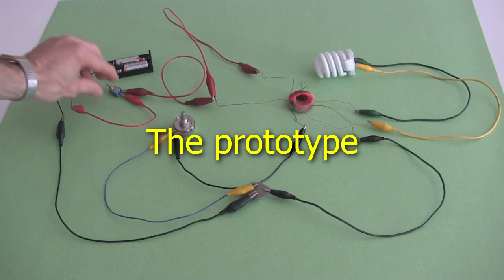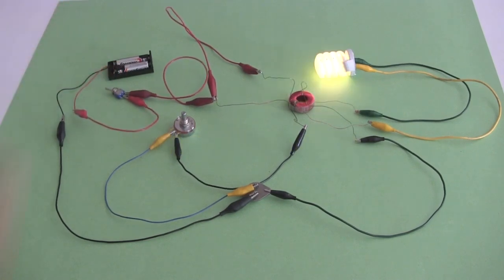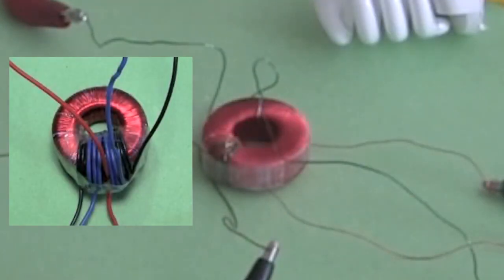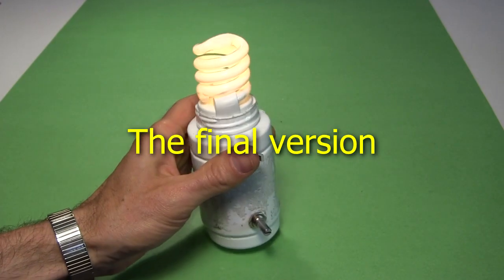Of course I first connected it all together with alligator clips to get it working. These early tests used wires with thinner insulation for the coils and worked until the high voltage damaged the insulation. The coils with thicker insulation, like I showed you how to make, don't have that problem. And then I started on a cleaner version.